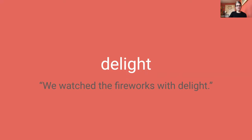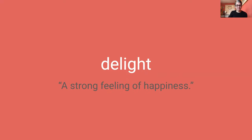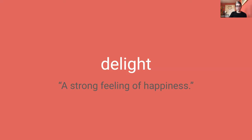Delight is so misunderstood that even in the dictionary they don't have a good definition. They know how to use it in a sentence: 'we watched the fireworks with delight.' You know that feeling — total engagement, leaning forward, eyes wide. But when they try to explain it, they say 'a strong feeling of happiness' — and that's not quite it. It's a mix of joy, engagement, and rapture. Together with Professor Talia Wheatley from Dartmouth's psychology and brain sciences department, we've been exploring what delight is, what happens in the brain, and how you can design products and services to maximize it.